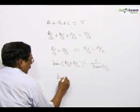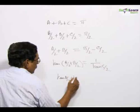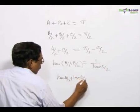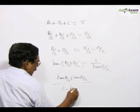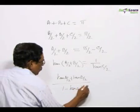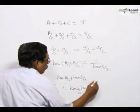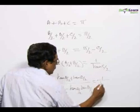Therefore, you will have tan A by 2 plus tan B by 2 divided by 1 minus tan A by 2 into tan B by 2 is equal to 1 by tan C by 2.